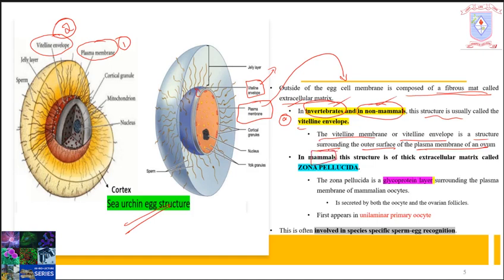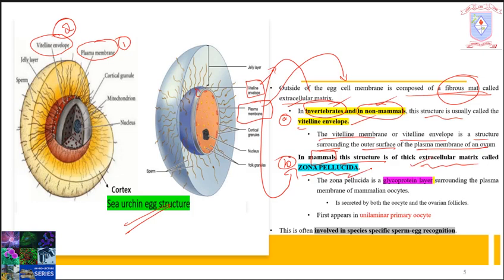In the case of mammals, this fibrous mat extracellular matrix structure is a thick extracellular matrix called zona pellucida. So in the case of mammals, you cannot see the vitelline envelope, but you can see a structure that is thicker than the primitive vitelline envelope — that is called the zona pellucida. The zona pellucida is a glycoprotein layer surrounding the plasma membrane of mammalian oocytes.